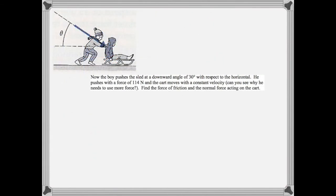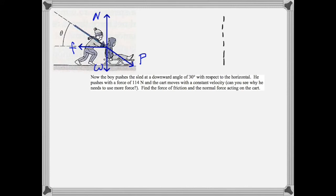Now we have a similar situation, but instead of being pulled, the boy and the sled are being pushed with a force that is downward at an angle of 30 degrees. In order to make the diagram more visually useful, we'll draw the vector representing the push force as emanating from the boy and the sled. The other forces — the weight, the normal, and the friction — are all the same as before. You might be able to see why the normal force is bigger than it was in the last problem. We'll draw our component diagram starting with axes, then add the weight, friction, and normal force, all of which already lie along axes. The push force, not being along an axis, will have to be resolved into components — here is the horizontal component labeled px, and the vertical component labeled py.